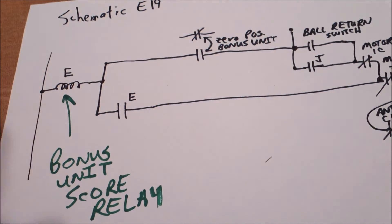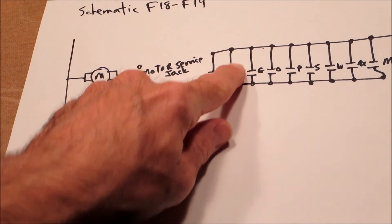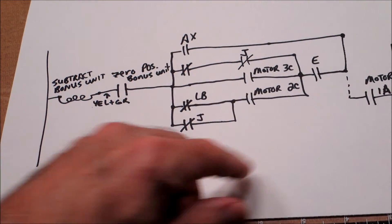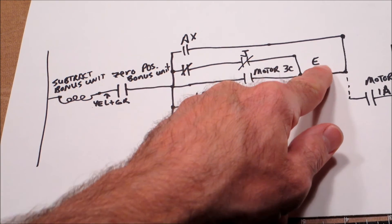That's going to say close the E circuit. The E circuit is then going to do a couple things. It's going to close here, which is going to run the score motor. And then since E is closed until it opens, this E is going to be closed.